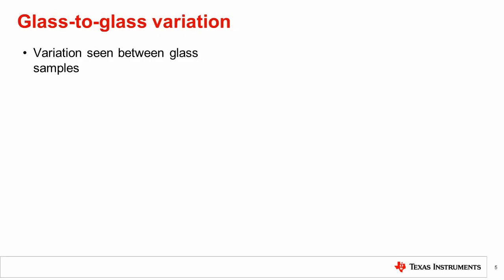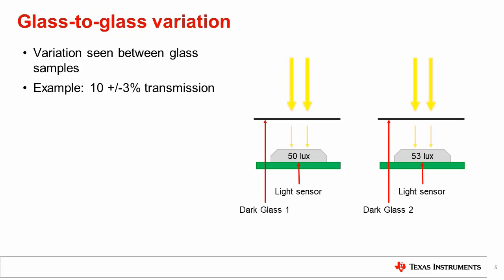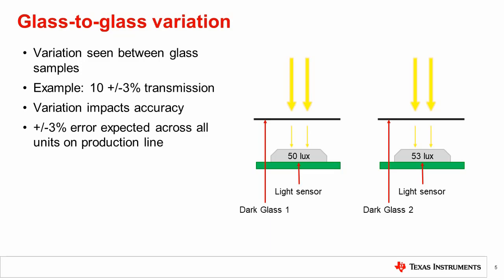Unit-to-unit variation is the variation seen between different samples of dark glass. This is expressed in the form of a plus-minus percent expected variation. An example is a 10% transmissive glass with plus-minus 3% expected variation. The variation indicates how much accuracy we can expect from our compensation factor. In this case, the worst case is 7 and 13% transmission. Using our compensation factor of 10, we can expect plus-minus 3% error across units off the production line.